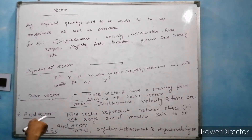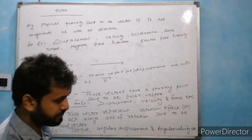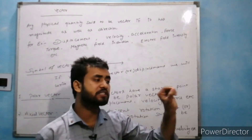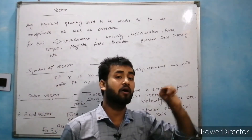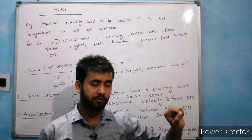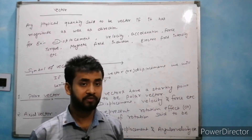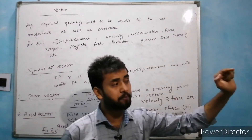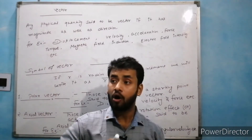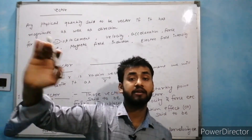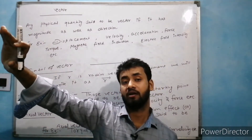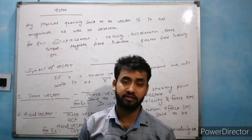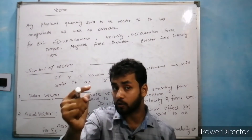A vector quantity has magnitude as well as direction. For example, if you say 6 km per hour, that is speed. But if you say 6 km per hour along the y-axis or along east — where you have a specific direction — then it will be velocity.